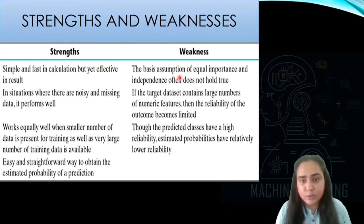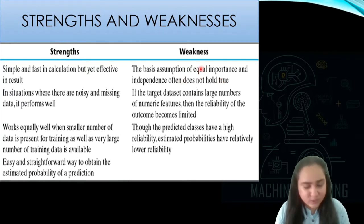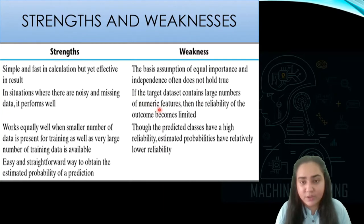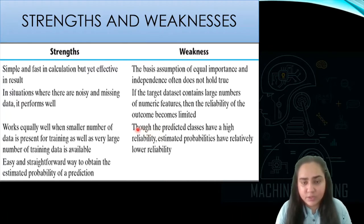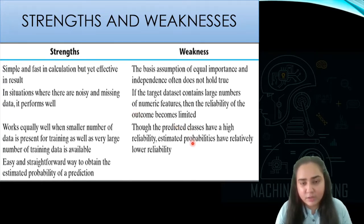Let's take a look at some weaknesses. One weakness is that the Bayes assumption of equal importance and independence often does not hold true. The Naive Bayes classifier always starts with all hypotheses being equally probable, and that assumption does not always hold once the algorithm is applied. If your target dataset contains large numeric features instead of categorical variables — like age, height, or weight — the reliability of the outcome becomes limited. Also, though the predicted classes have high reliability, the estimated probabilities have relatively lower reliability.